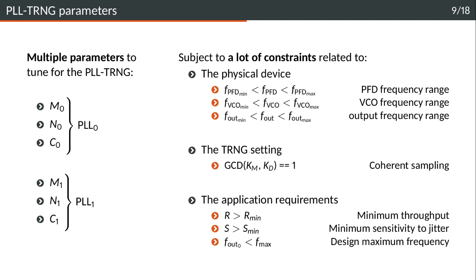We have the constraints for the TRNG setting because we need KM and KD to be co-primed to perform coherent sampling. And then we have the application requirements. Typically a designer will want a minimum throughput for the TRNG. We can also define a minimum sensitivity to jitter, and the output frequency of PLL0 must be below the maximum frequency of the design.